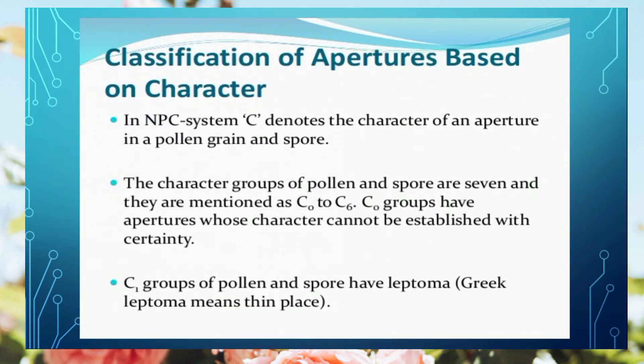Now we discuss the classification of apertures based on character. Here also we have further grouping from C0 to C6. C0 indicates the character is not well established — when you cannot say with certainty what the character is, use the C0 group. If there is a thin space present on the pollen grain, it is placed in the C1 group, and this thin space is called a leptoma.